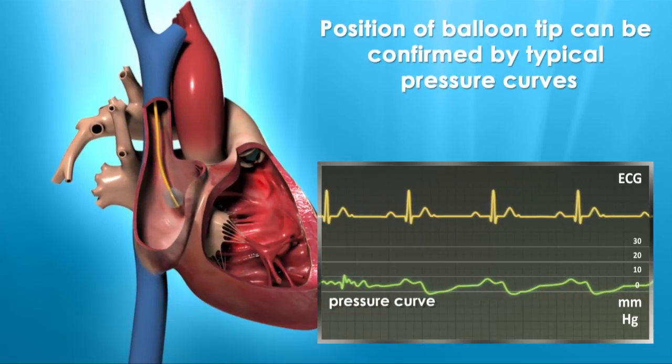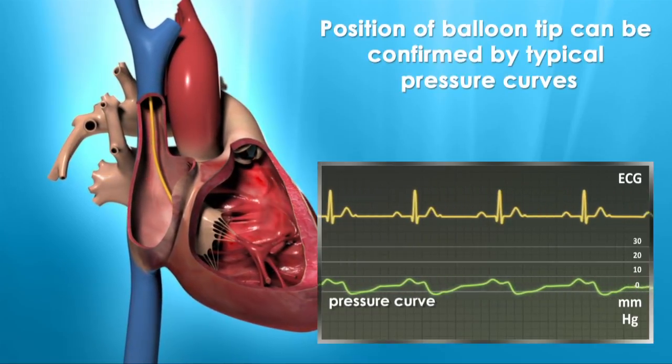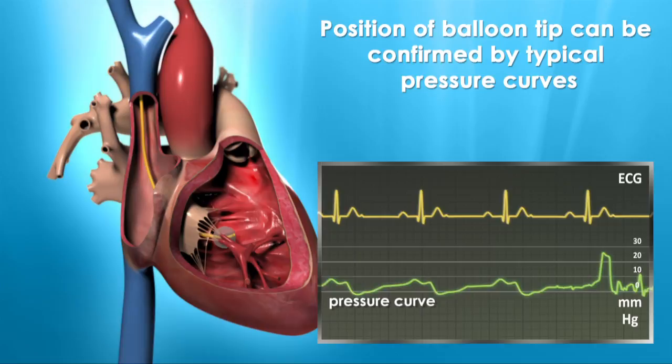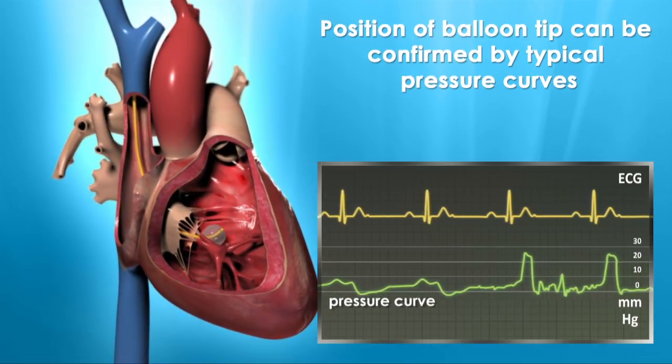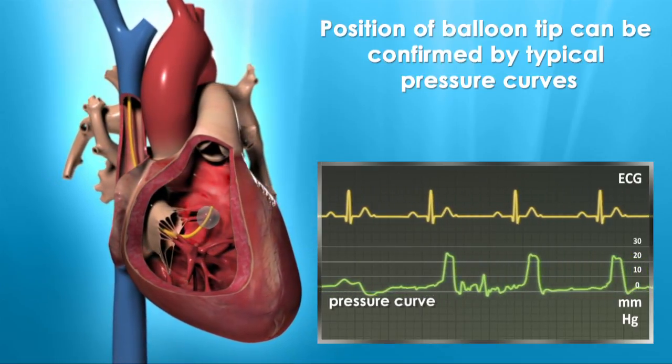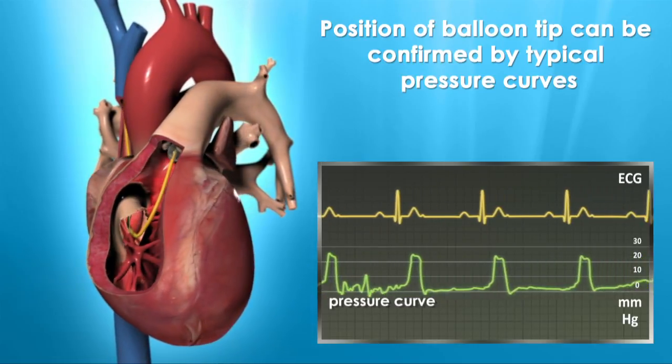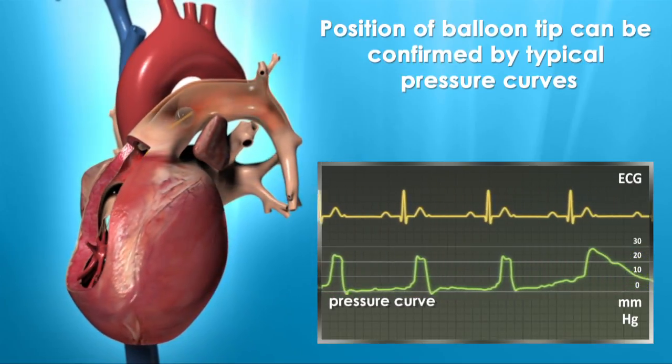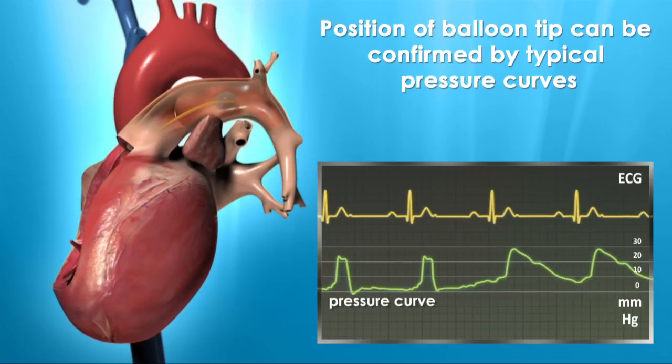On its way through the heart to the pulmonary artery, it measures pressure in the right atrium, the right ventricle, and the pulmonary artery itself. Additional hemodynamic parameters can be calculated from these direct invasive measurements taken with the catheter.